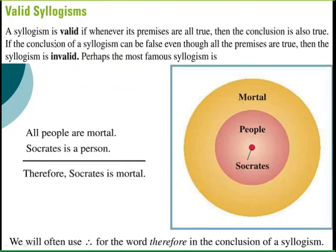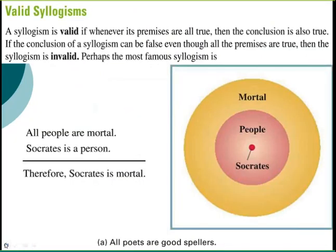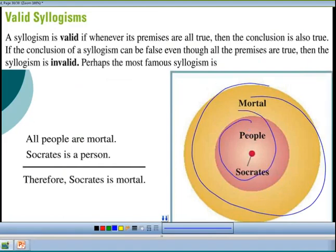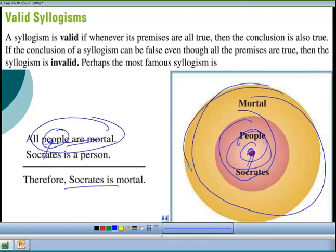If the conclusion of a syllogism can be false even though all the premises are true, then the syllogism is invalid. A very famous syllogism involves Socrates: all people are mortal, Socrates is a person, therefore Socrates is mortal. The goal is to draw it — kind of like a Venn diagram — where people are inside the group of mortals, and since Socrates is in the people bubble, he's inside the mortal circle too.